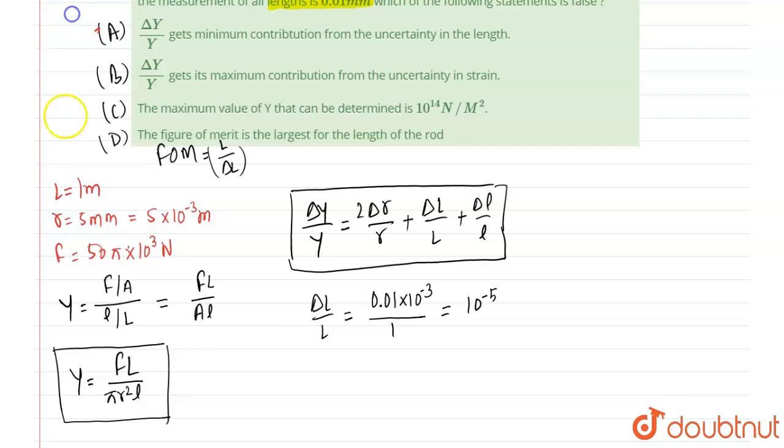Now check option B. From the relation we also can say that delta Y over Y will get maximum contribution from the uncertainty in strain. Now we will find the value of Y.